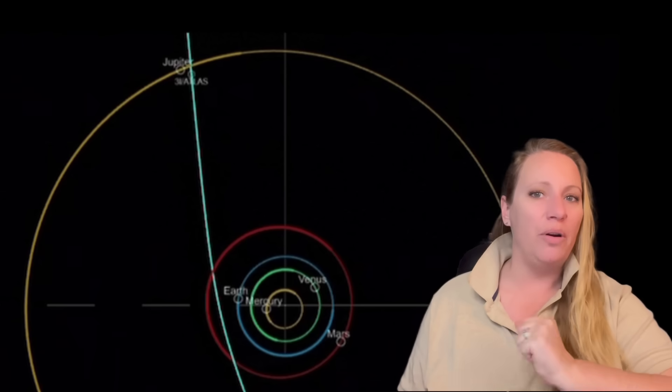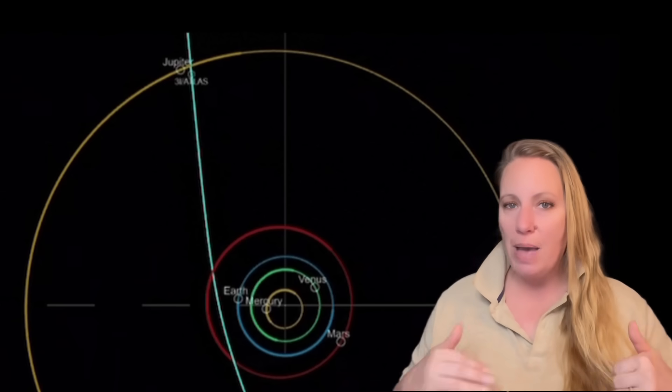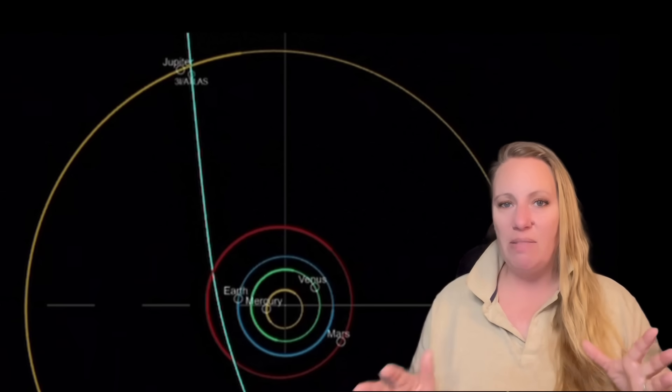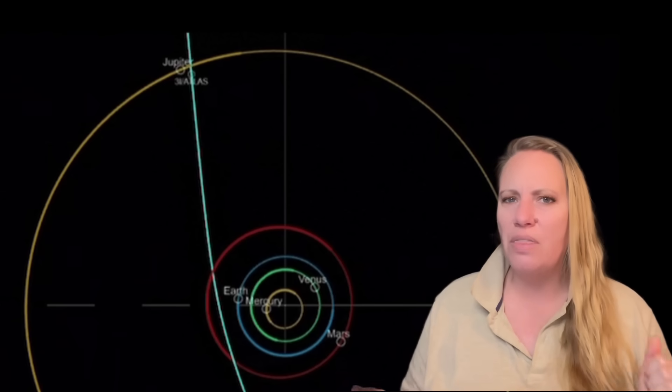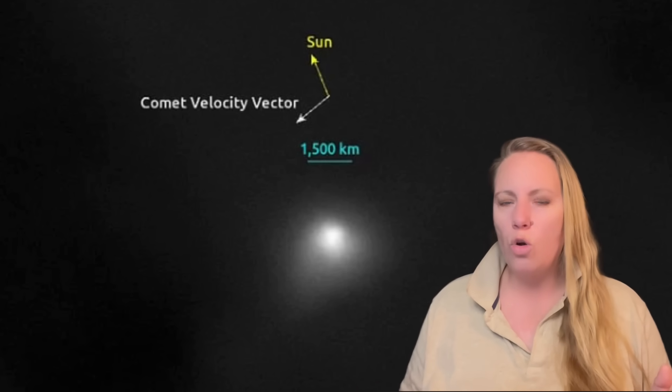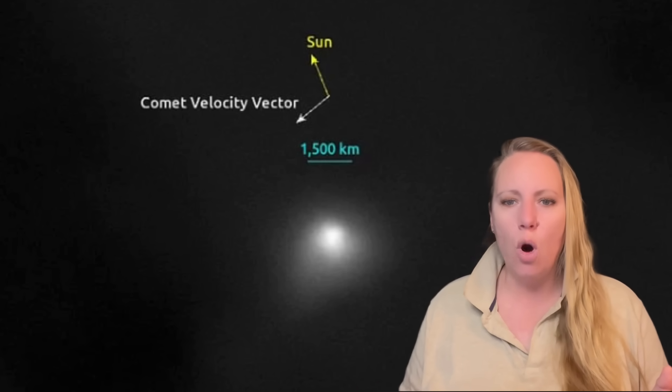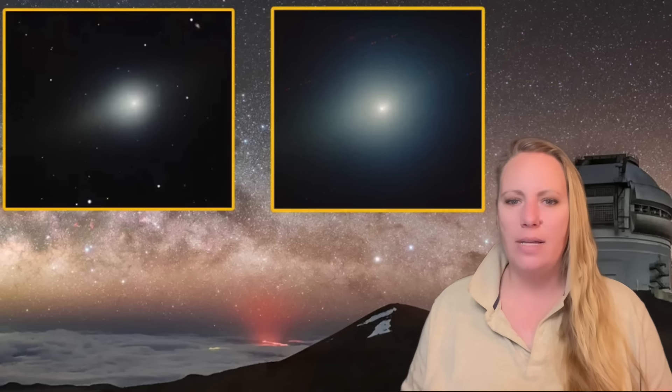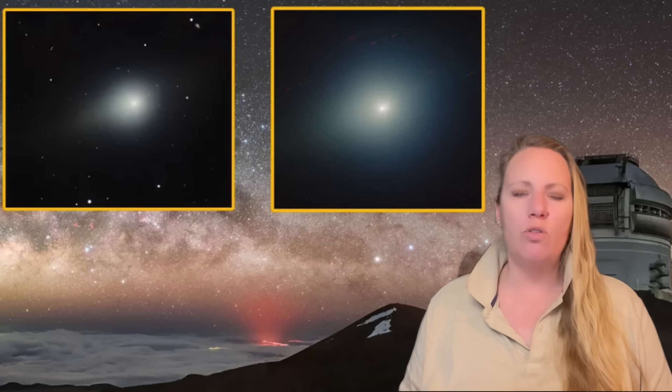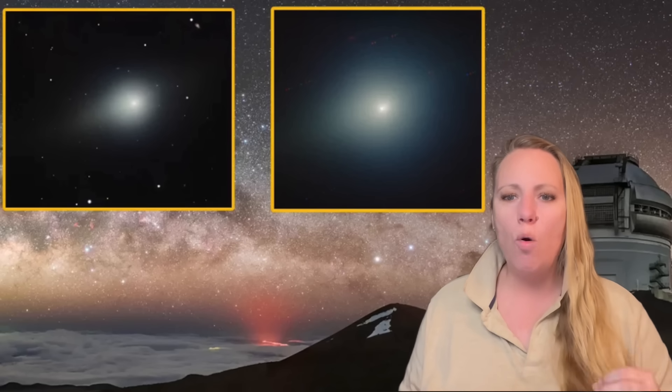Number seven, avoids a close path with Earth, as if it doesn't want to go to Earth, right? It's passing us by, but it's not getting as close as we thought it would. So number eight, no nuclear dust, no clear dust coma. Number nine, unusual brightness behavior. So bright.